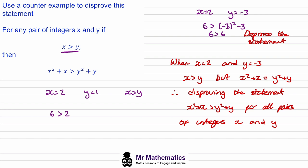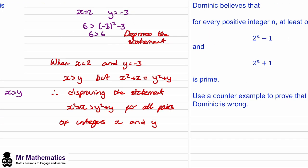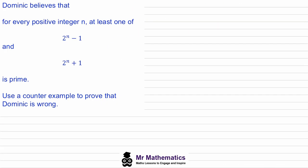Let's try another example. We're told Dominic believes that for every positive integer n, at least one of 2 to the n minus 1 and 2 to the n plus 1 is prime. We've been asked to use a counter example to prove that Dominic is wrong. If we begin with n equals 3, we find 2 to the 3 minus 1 is 8 minus 1, which is 7, and 7 is prime.